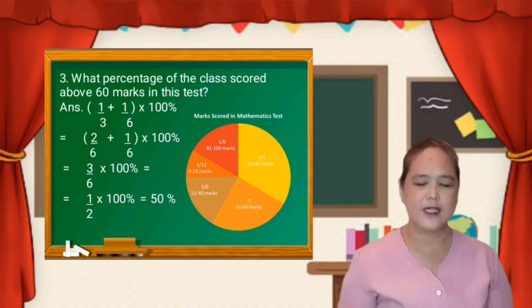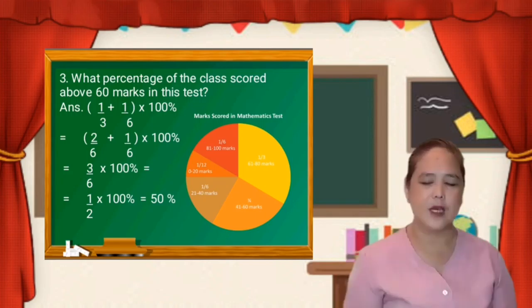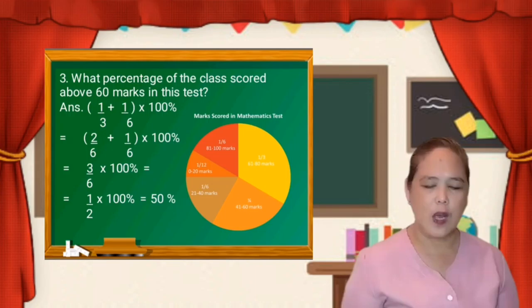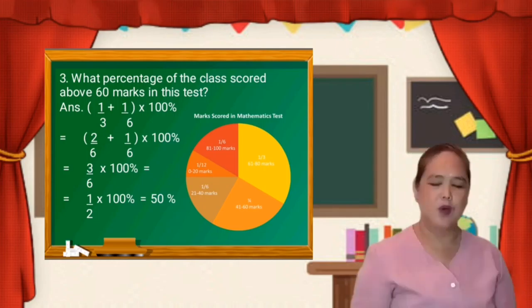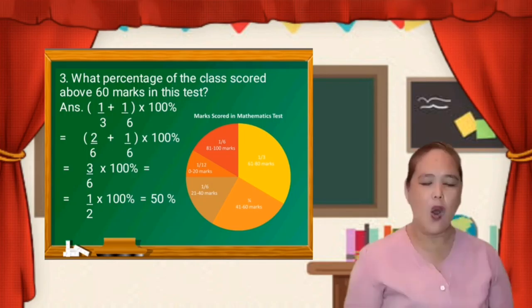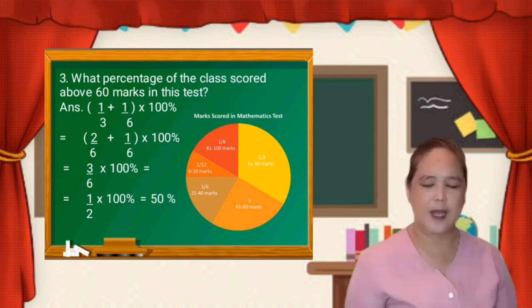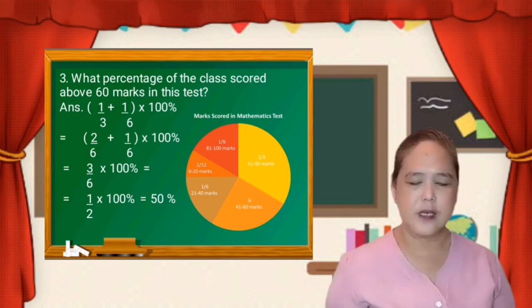The least common denominator of 3 and 6 is 6. So 6 divided by 3 is equal to 2, then 2 times 1 is equal to 2. Then 6 divided by 6 is equal to 1, times 1 is equal to 1. So we can now add because they have the same denominator. So 2/6 plus 1/6 is equal to 3/6 times 100%. Reducing 3/6 to lowest term gives 1/2. Then multiply by 100%. So 1/2 times 100% is equal to 50%. The answer for number 3 is 50%.